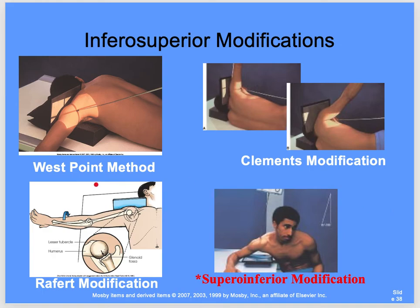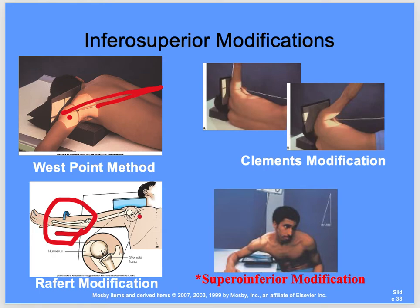For inferior superior modifications, we have the West Point modification where the patient is prone — you're still coming inferior superior but it is a steep angle, angling down into the joint instead of into the axillary. The Rayford modification is basically rotating that arm as much as possible, which brings that head out more, but everything else stays the same. The cassette is into the neck as much as possible, still at that 25 to 30 degree angle into the axilla — it's just showing the head of the humerus a little bit better.